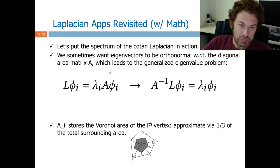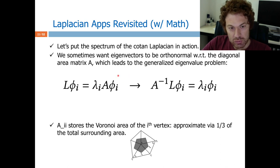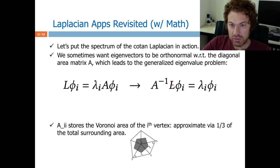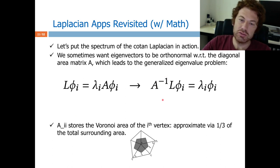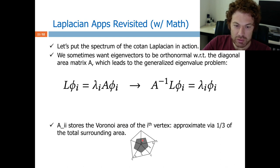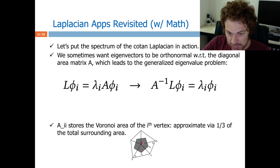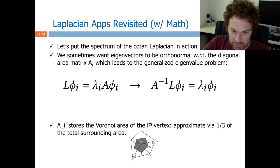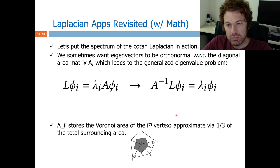All you have to do is plug this area matrix within the formulation. Then the eigenvectors will be orthonormal with respect to A. To solve this, take the inverse of A and put it to the left — this cancels out. Inverse of A is not a big deal because A is diagonal, so the inverse is just the reciprocal of the diagonal entries. A given entry is the Voronoi area of the i-th vertex, which can be approximated by taking one third of the whole area of each neighboring triangle.